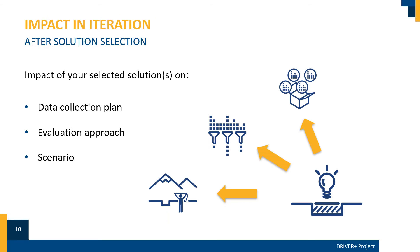Every time your information changes, you might want to update other parts of this cycle. So revisit each step and see whether it is still applicable for assessing the selected solution. What impact does your selected solution have on your data collection plan, the chosen evaluation approach, and the scenario you drafted? For example, if you have chosen a particular solution, you have to update your data collection plan to the specific characteristics of this solution — you might have to cut some pieces out and add or describe some parts in more detail.